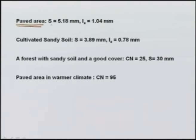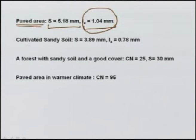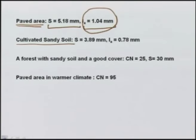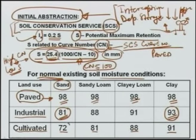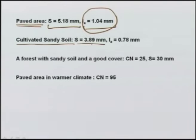For a paved area using a curve number of 98, we get S equal to 5.18 millimeters and initial abstraction of 1.04 millimeters. This indicates that if rainfall is less than about 1 millimeter, all of it will be absorbed and there will be no runoff. Once rainfall exceeds 1 millimeter, only then will runoff occur. For a cultivated sandy soil with curve number 72, we get S equal to 98.89 millimeters and initial abstraction of 0.78 millimeters.